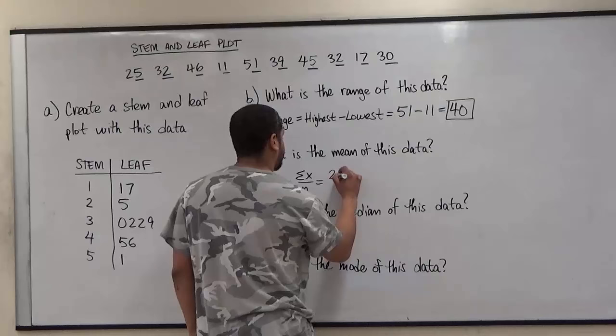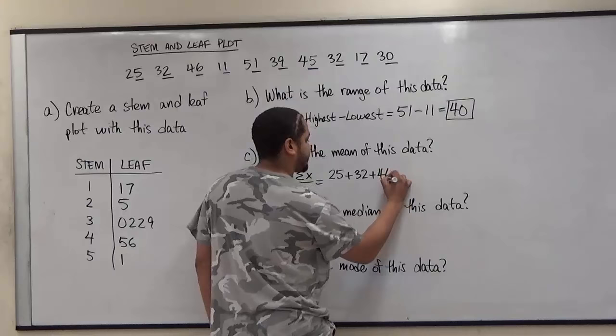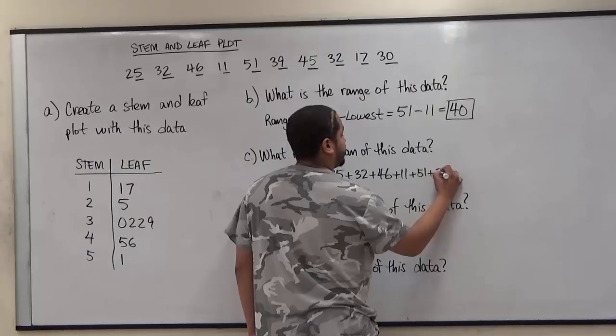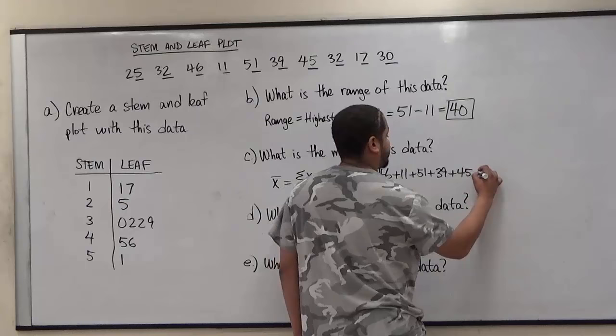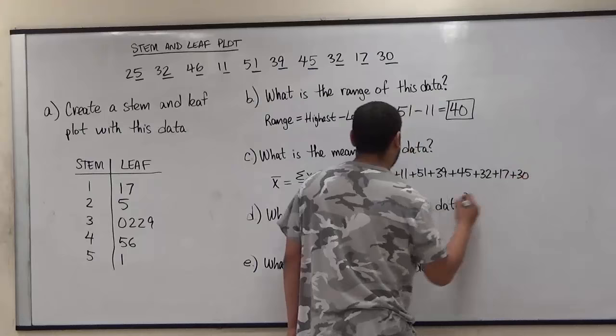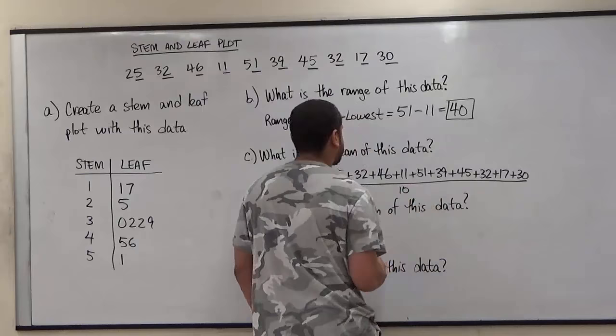So we have twenty-five plus thirty-two plus forty-six plus eleven plus fifty-one plus thirty-nine plus forty-five plus thirty-two plus seventeen plus thirty. And we're going to divide all of this by the number of samples we have, which I believe to be ten.